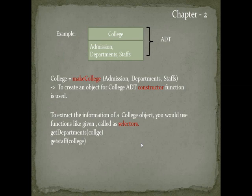Let's recall: Abstraction means providing only the essentials and hiding the details. Data abstraction means the programmer need not worry about the implementation — they must just know how to use it. Data abstraction is defined by combining constructor and selector functions into an abstract data type.